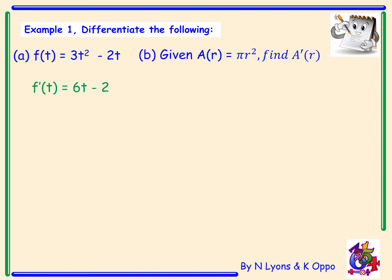Example 1b. Given A(r) = πr², we need to find the derivative with respect to r. Differentiating, the 2 comes down and multiplies with π, and we subtract 1 from the power of r. Our final answer is 2πr.